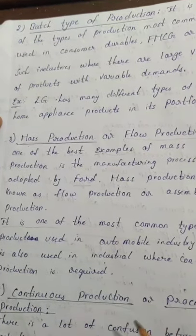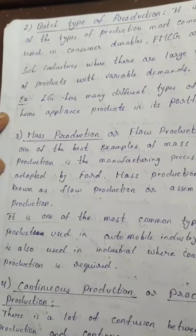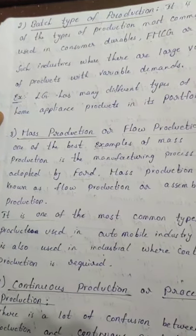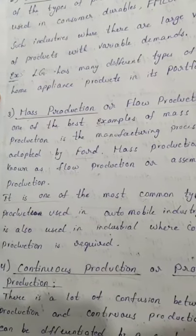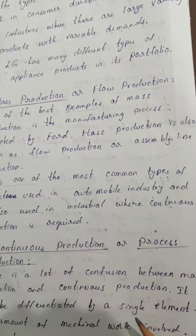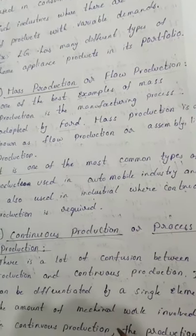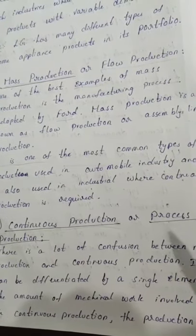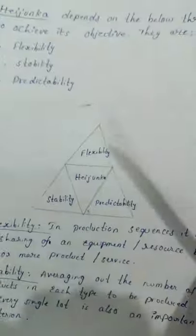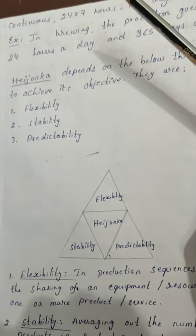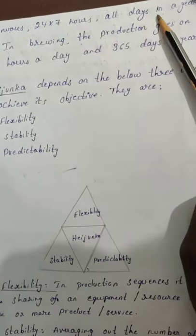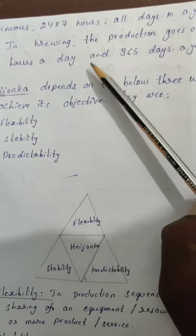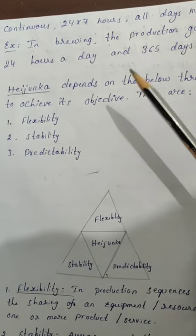Continuous production or process production: there is a lot of confusion between mass production and continuous production. It can be differentiated by a single element — the amount of mechanical work involved, which continues as an improvement process. The production is continuous 24 into 7, all days in a year — for example, 365 days working at the particular company.